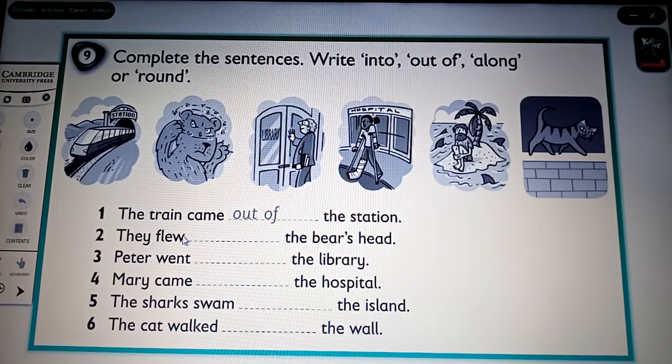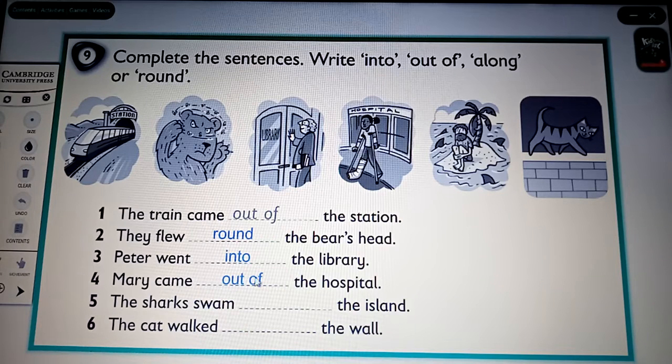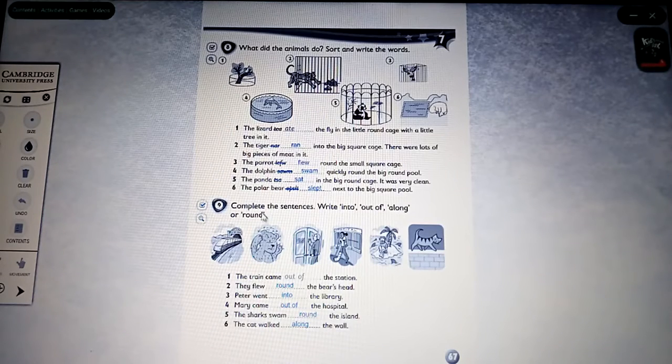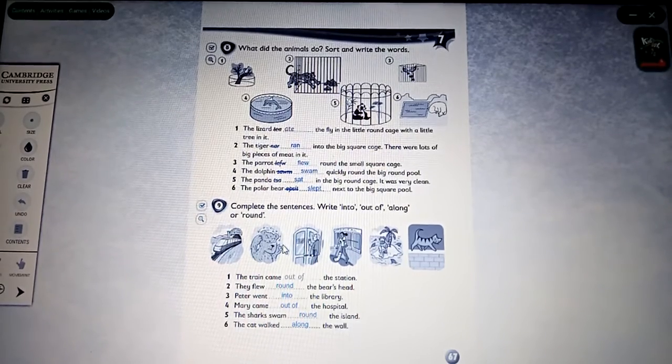Number 1. The train came out of the station. Yes. Number 2. They flew round the bear's head. Peter went into the library. Mary came out of the hospital. The sharks swam round the island. Finally six. The cat walked along the wall. It's important. Okay. Prepositions. Thank you.